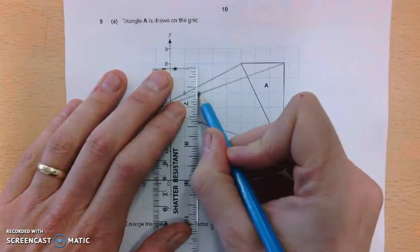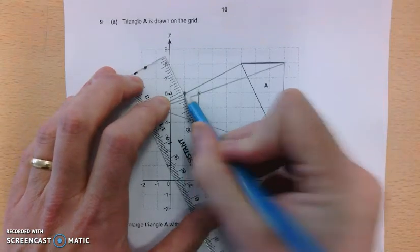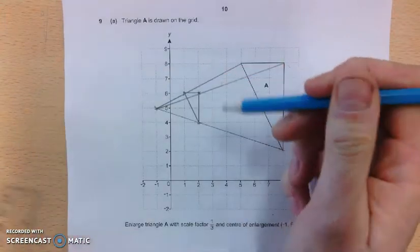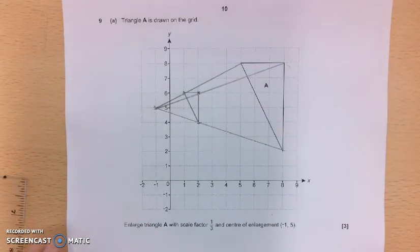So I'm going to join up those three corners, and I will have a triangle. And that will be my correct enlargement scale factor 1 third. So that's part A.